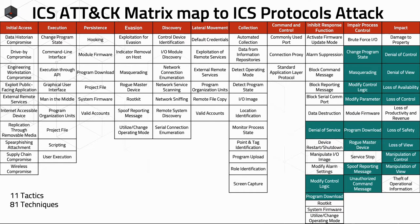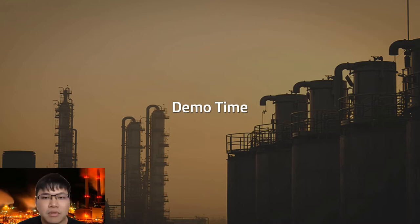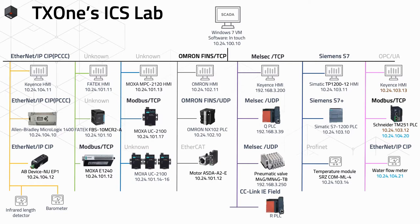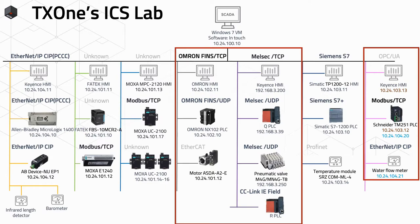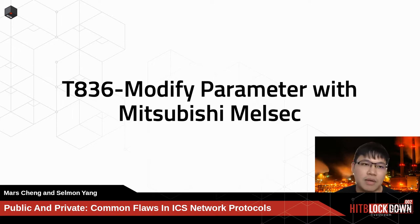Now I would like to demo some of our ideas about ICS network protocol attacks. This is our TX1 ICS lab. Many ICS communication protocols are used in this lab, including Ethernet/IP, Modbus TCP, Siemens S7, and other unknown protocols. Our demo will demonstrate the red team devices, focusing on Modbus TCP and Mitsubishi Melsec. The first demo will demonstrate T8-36: modified parameter with Mitsubishi Melsec protocol.